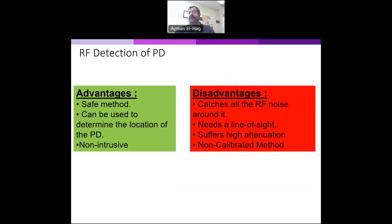Finally, it is a non-calibrated method. Because the emission that you are receiving does not reflect actually the actual value of the partial discharge. It reflects that there is a partial discharge, but it does not actually reflect what is the value of that partial discharge, because of the attenuation, because of the distance, because of the medium between the source and the antenna, and because of many other reasons. It is not possible to calibrate the magnitude of that partial discharge.